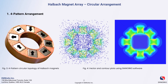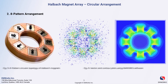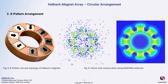Now let's move on to Case 2, which features the eight-pattern arrangement of the halbach array. In this setup, the magnets are configured to create eight distinct magnetic rings. This increased number of rings allows for greater refinement in the magnetic field distribution compared to the four-pattern arrangement.